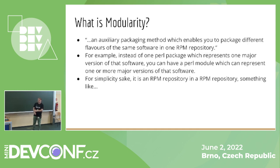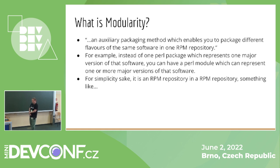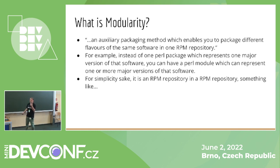Maybe you've heard about modularity, maybe not. Modularity was a project conceived through the notion that we wanted to include multiple different flavors of software in an RPM repository. It's an auxiliary packaging method for doing exactly this. For example, let's take Perl. Normally in a standard stable distribution like Fedora, you have only one major version of a package, supported for the whole lifetime of the distribution.